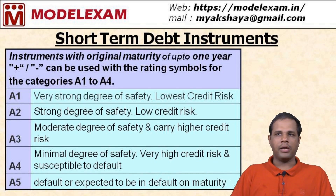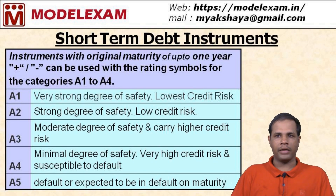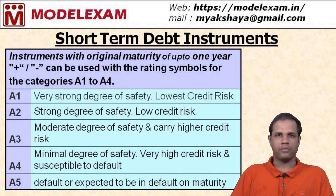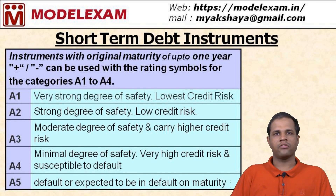Plus or minus modifiers can be used from A1 to A4 category — for example, A1 plus, A1, or A1 minus; and A4 plus, A4, or A4 minus. A1 minus is better than A2 plus, and A2 minus is better than A3 plus. This concludes the short-term debt instrument credit rating symbols.